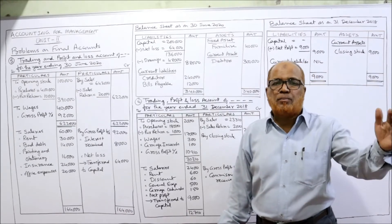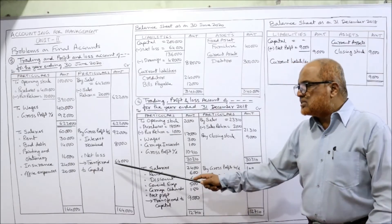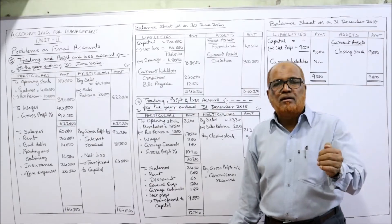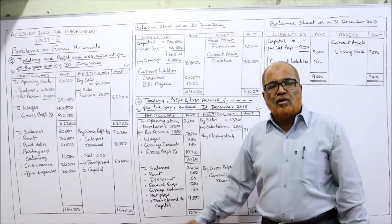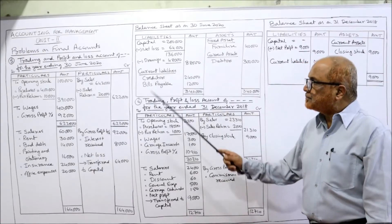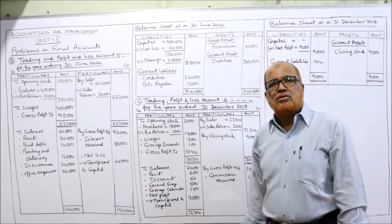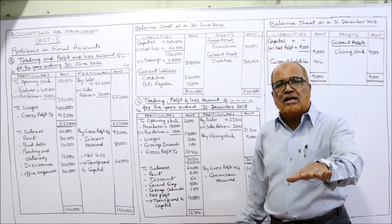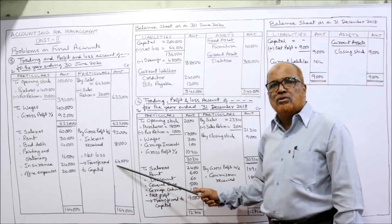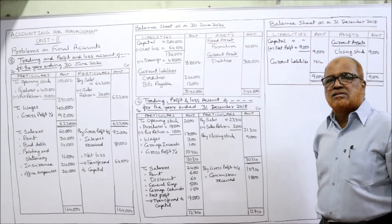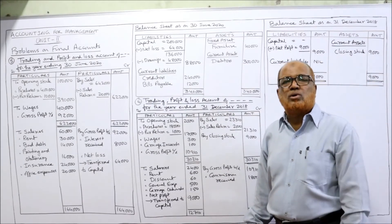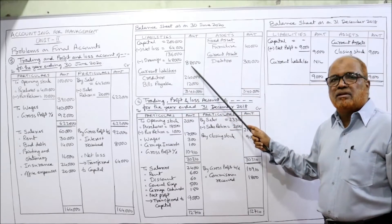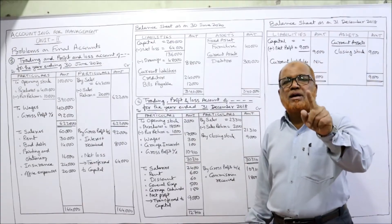This is the first problem where we are getting a net loss — in all other problems we got net profit. This net loss will be transferred to capital and deducted from it. Balance sheet: capital is given as two lakh. Deduct net loss of sixty-four thousand — two lakh minus sixty-four thousand equals one lakh thirty-six thousand. Then deduct drawings. Drawings are also given, so eighty-eight thousand is the capital. Current liabilities are creditors and bills payable.